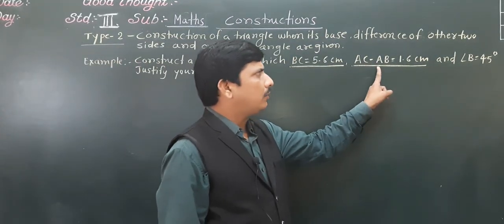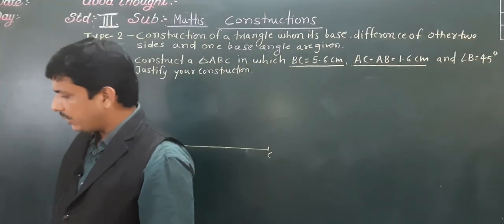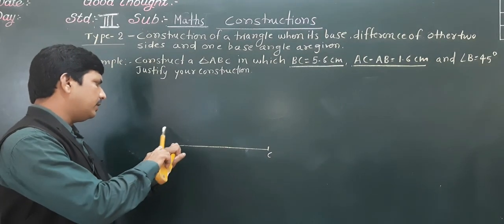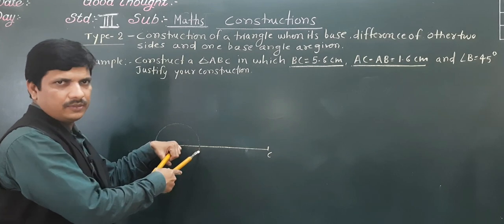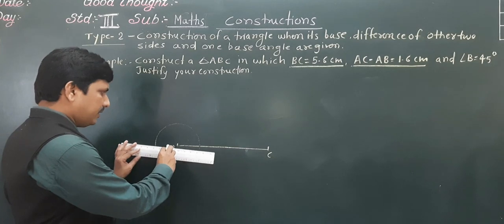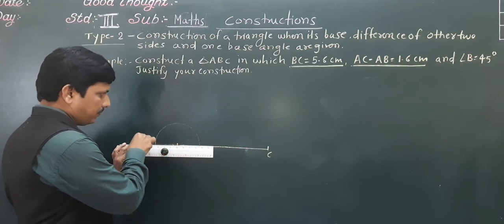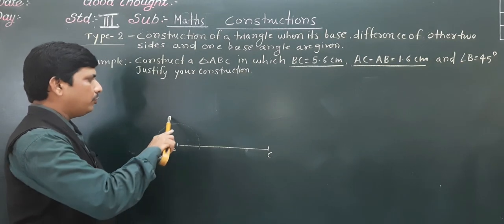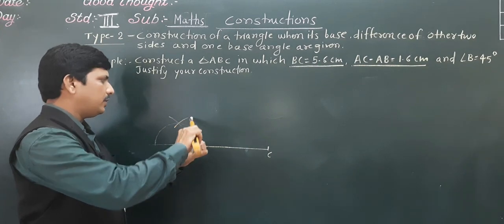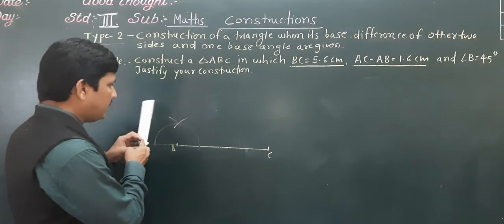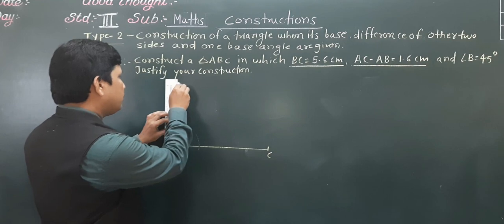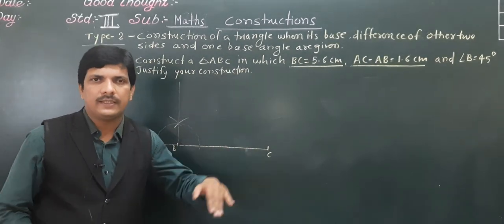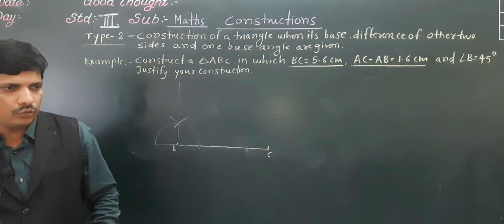Now, AC minus AB — we will think about this factor later. Angle B is equal to 45 degrees, so we have to construct 45 degrees at B. From B as center, you can make a semicircle with a convenient radius. Then from the arc, taking more-than-half distance, make marks and get an intersection point — joining that gives 90 degrees. I am making a faint line because we do not need 90 degrees, we need 45 degrees. So when you bisect the 90-degree angle, you will get 45 degrees.